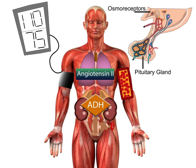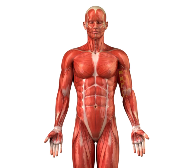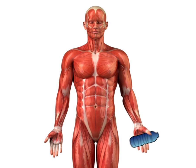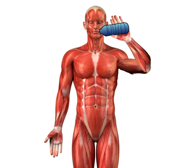Urine that is excreted will be highly concentrated with solutes. While all this is happening, the increase in sodium concentration along with reductions in blood volume and blood pressure signal our brains that we're thirsty, and hopefully in response we drink, helping bring water volume back to normal.